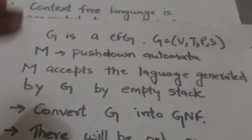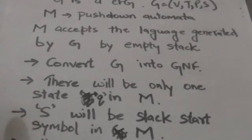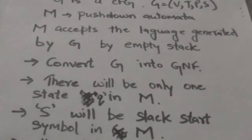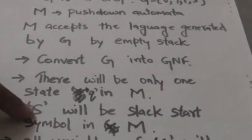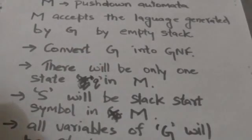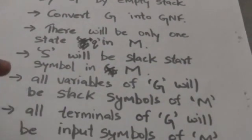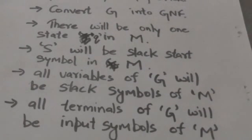First of all we will convert this grammar G into GNF. Pushdown automata M will have only one state Q. The start symbol of grammar G will be the stack start symbol in pushdown automata M. All variables of grammar G will be stack symbols of pushdown automata M, and all terminals of grammar G will be input symbols of pushdown automata M.